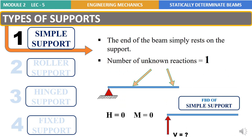To summarize, a simple support is one in which the end of the beam simply rests on the support. The number of unknown reactions is equal to 1 — the only unknown reaction is the vertical reaction to be found, while the reactions due to horizontal forces and moments are equal to 0. In the free body diagram of a simple support, we have only one unknown: the vertical reaction at the support.